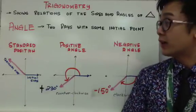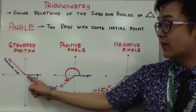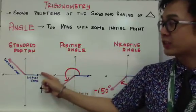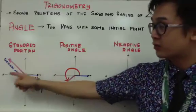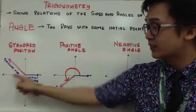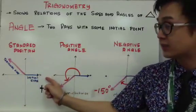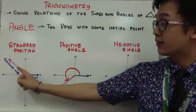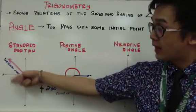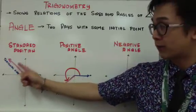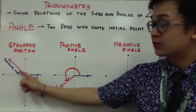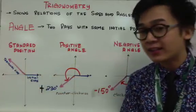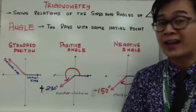An angle in standard position will always have the initial side on the positive x-axis — not on the y-axis or the negative x-axis. The terminal side, on the other hand, is the ray that moves around the xy-plane. By definition, the terminal side is the ending side — that's where your angle ends.